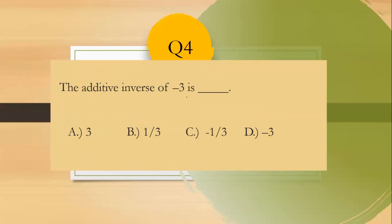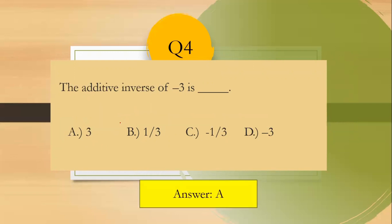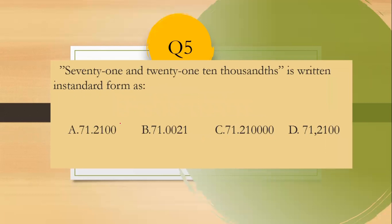Question number four: The additive inverse of negative three. As we know, the additive inverse of negative a is positive a, because inverse of addition is its opposite. Since this is negative three, the answer is three. That is the additive inverse. The answer is letter A, three.